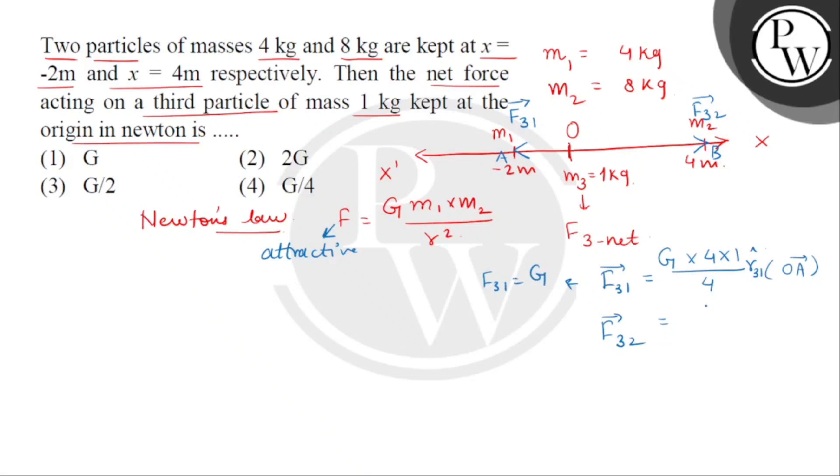Similarly, F32 vector is capital G multiplied by 8 multiplied by 1 divided by the distance square which is 16, 4 square. So, it is G by 2, and we will multiply R32 cap. This will be along OP.